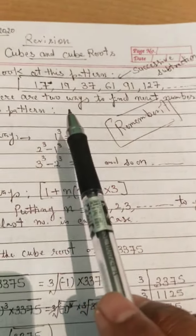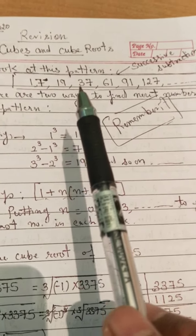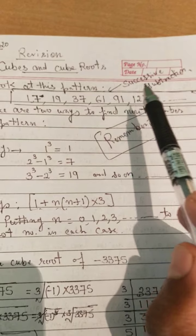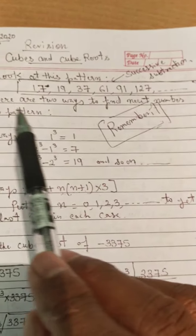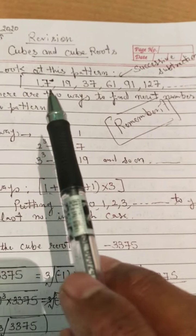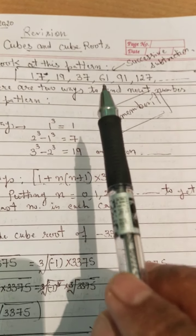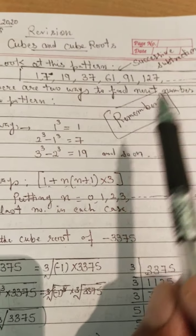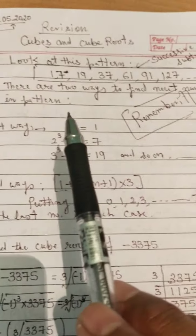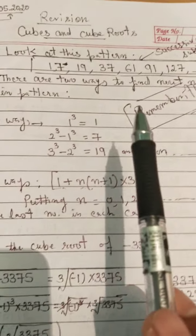This pattern is also used to find the cube root using successive subtraction. In successive subtraction, go on subtracting the given numbers — first 1, then 7, then 19, then 37 — till your remainder becomes 0. In this way we can find the cube root using successive subtraction.